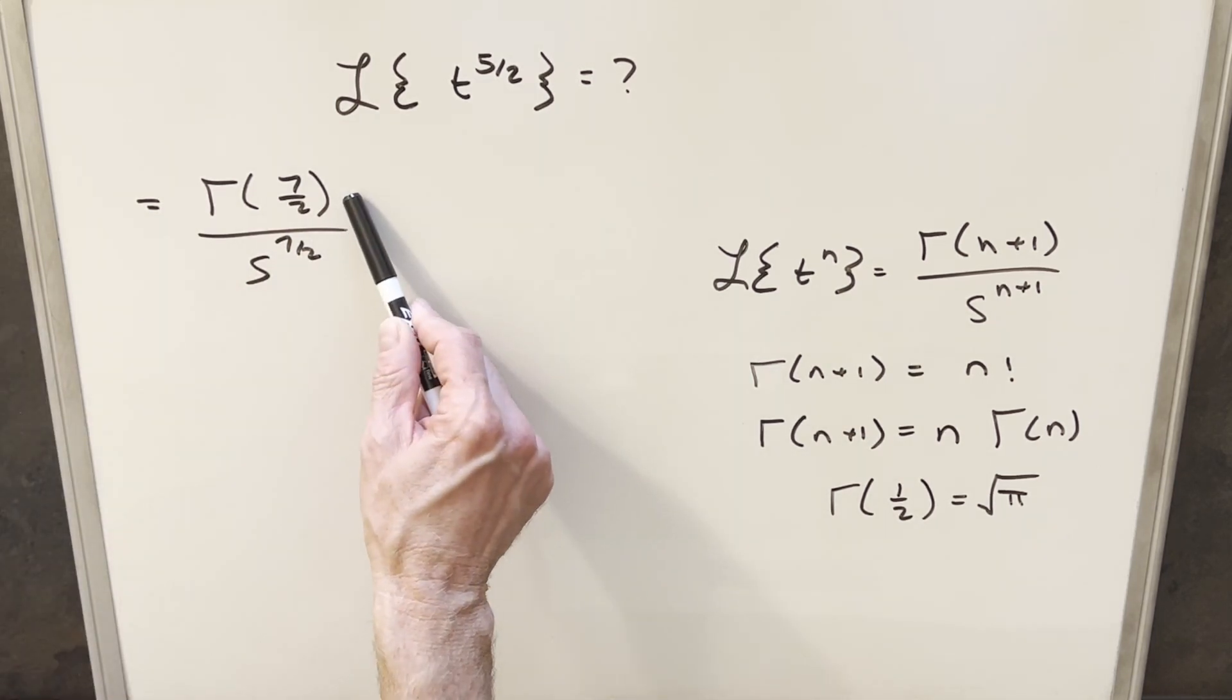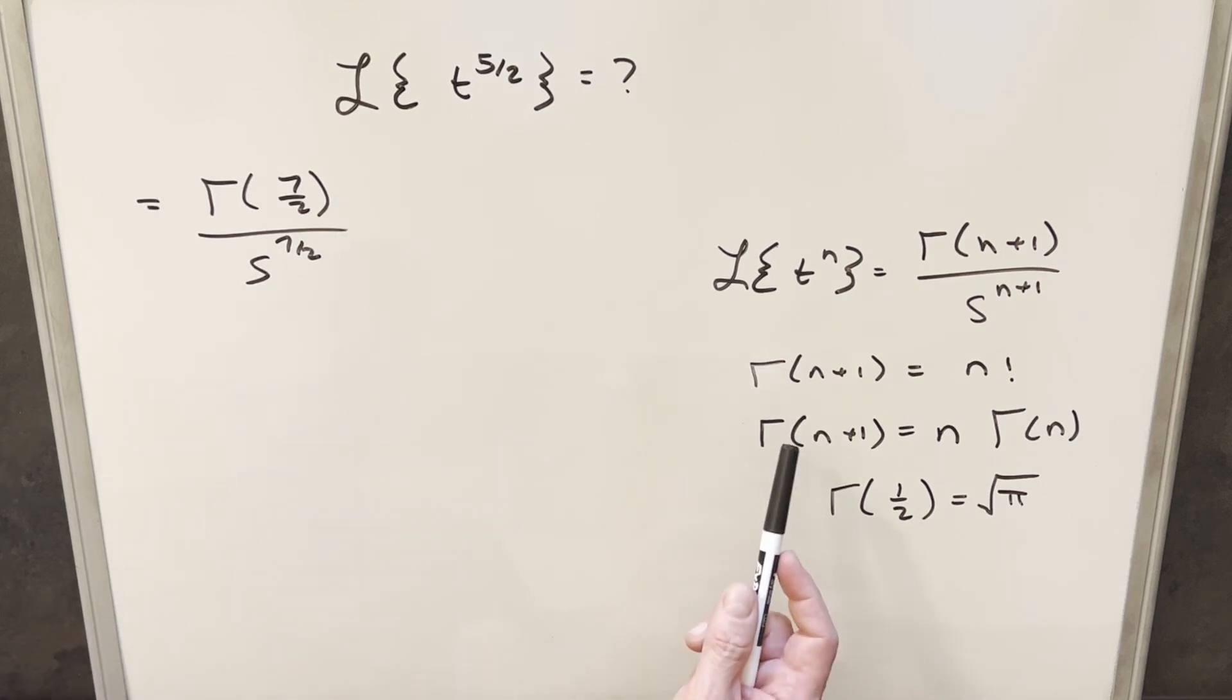But from here, what I want to do is try to get a more familiar value for the gamma function of 7 halves, and we can use these formulas. Now you notice with this first formula, we could express the gamma function in terms of factorials, but generally a factorial is considered more for integer values. So what we can do instead is use this second formula.